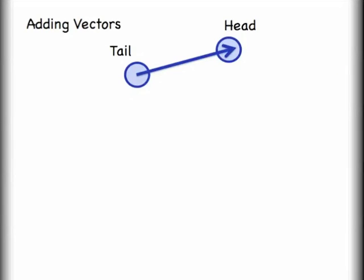Just so everybody's on the same page, here's the tail and the head of a vector. We say the head is always the arrow point.